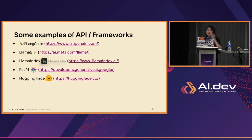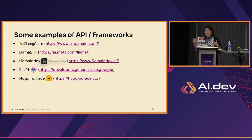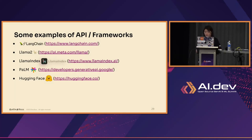Some examples of APIs and frameworks — how do we start doing something? Common ones perhaps you've heard about by now: LangChain, Llama 2, Llama Index — there are also speakers from those companies at this conference. And then Palm, and Hugging Face. Hugging Face is interesting — it's an open source AI hub. Think of it more like a GitHub for code repositories, but this is an AI hub where you can search for things and use them for free.